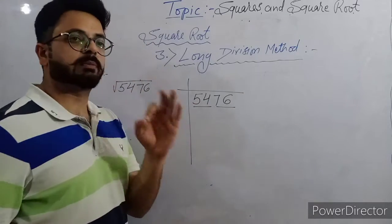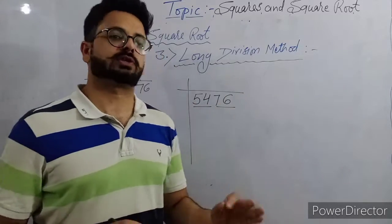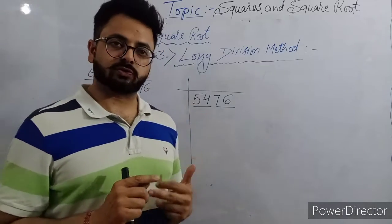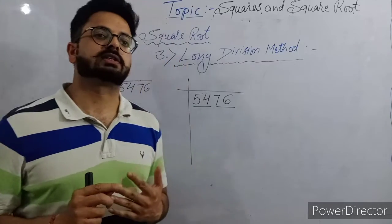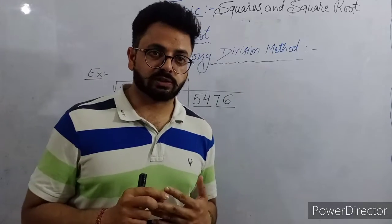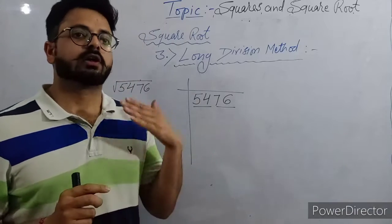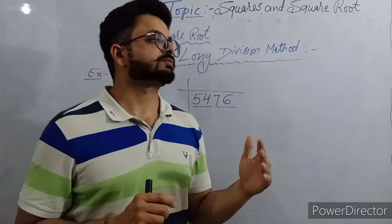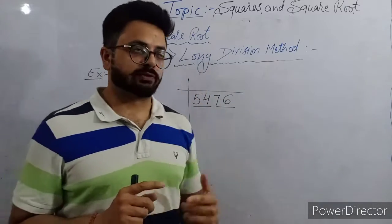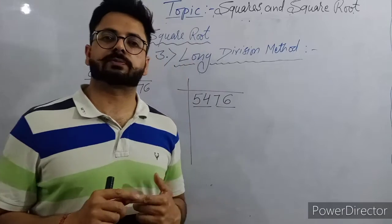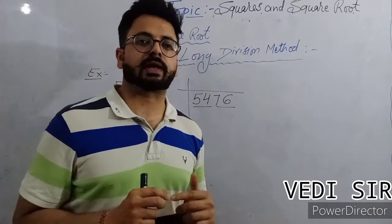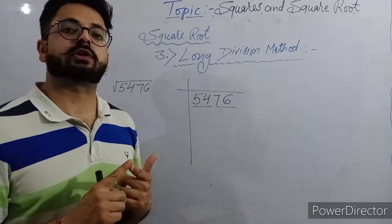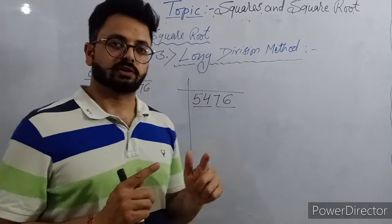The first period is 54. Which number's square can we subtract from this? One squared is 1 — we can subtract. Two squared is 4 — we can subtract. Three squared is 9 — we can subtract. Four squared is 16 — we can subtract. Five squared is 25 — we can subtract. Six squared is 36 — we can subtract. Seven squared is 49 — we can subtract. Eight squared is 64 — we cannot subtract from 54.